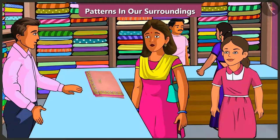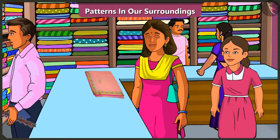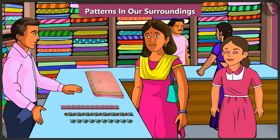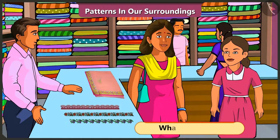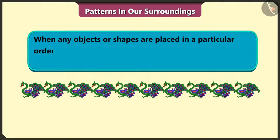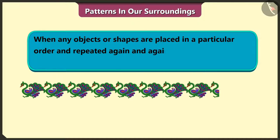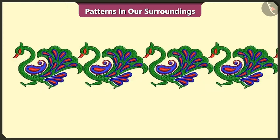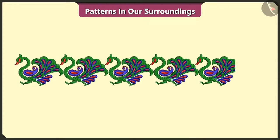Brother, show me a good border or lace which can be stitched to the saree. These are the options available. You can pick any pattern that you like from these options. Mummy, what is a pattern? When any object or shapes are placed in a particular order and repeated again and again, it is called a pattern. Look, this lace has a pattern made of peacocks. Oh yes, here the peacock motif has been repeated again and again.